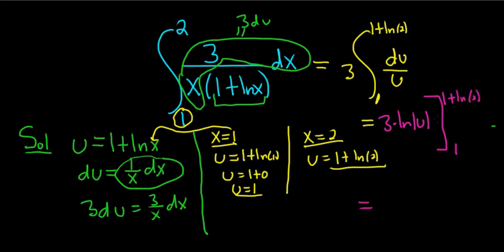And now we just use the fundamental theorem of calculus which says that we take this and plug it in here. So this is 3 times the natural log of, it's always the top one first, so 1 plus ln 2, then minus 3 times ln absolute value of 1.